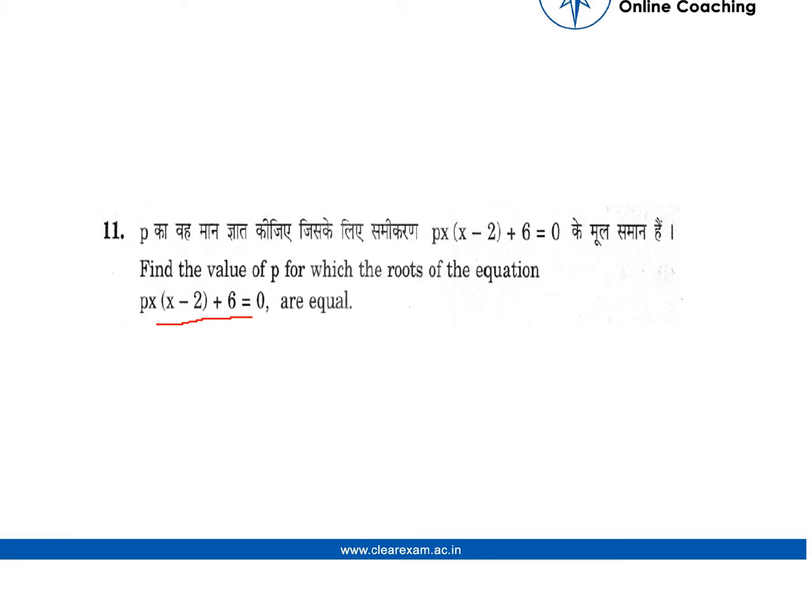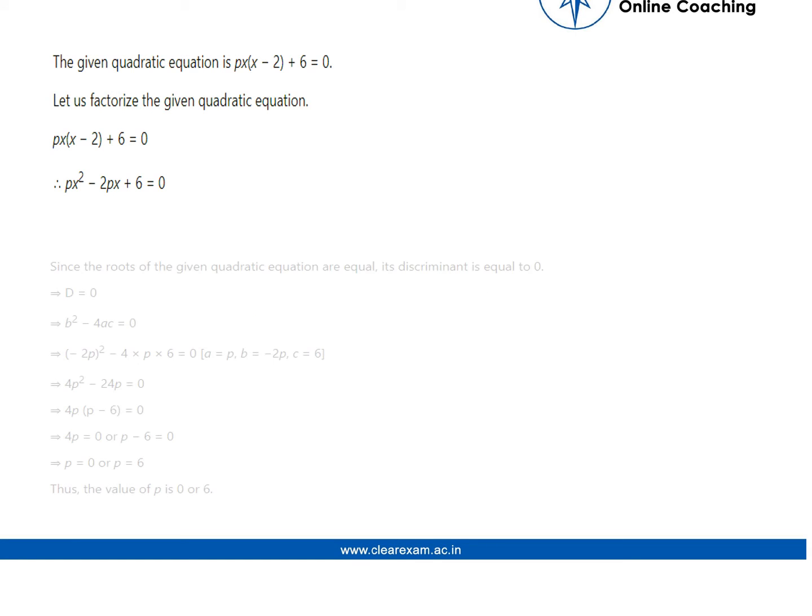We know that the roots of the equation are equal when discriminant is equal to 0, so B squared minus 4AC will be 0. For B and AC, you have to compare the quadratic equation when we have opened the bracket to ax squared plus bx plus c.